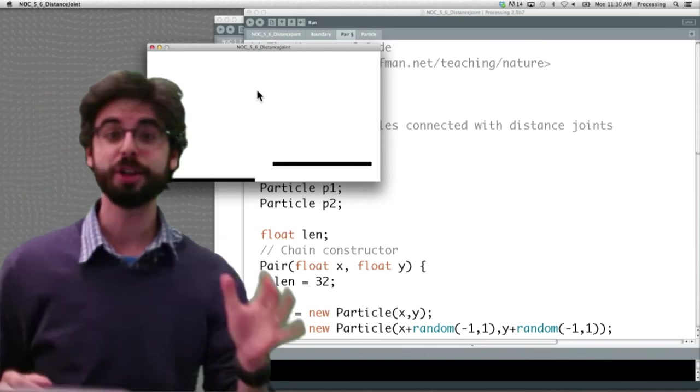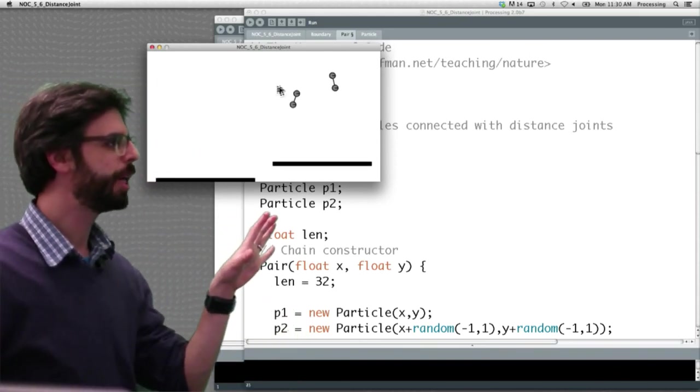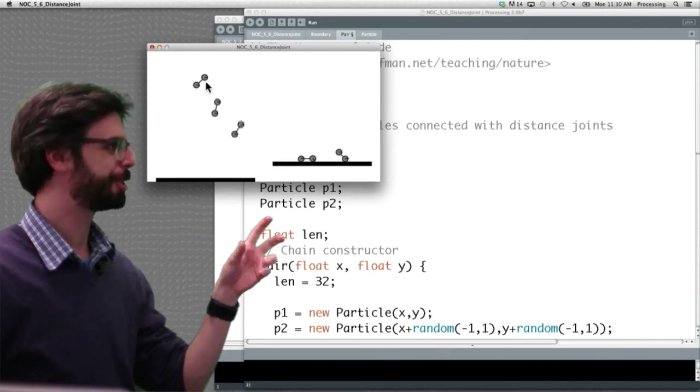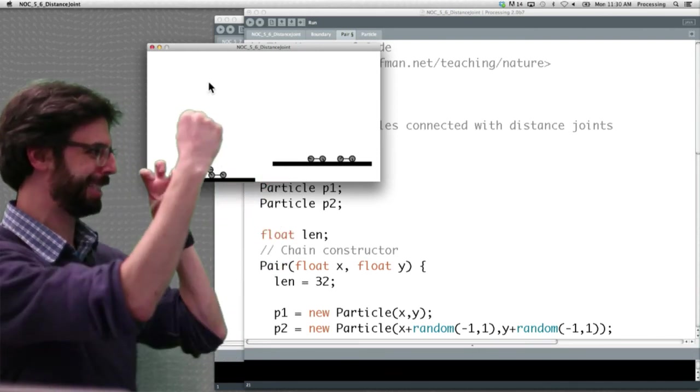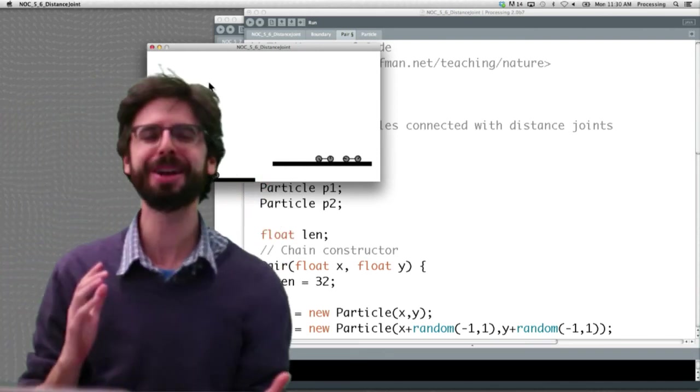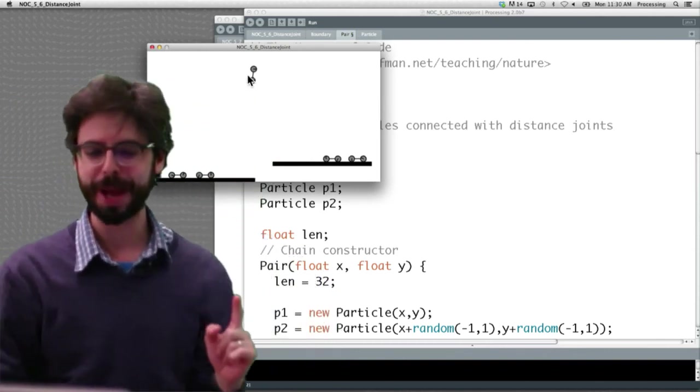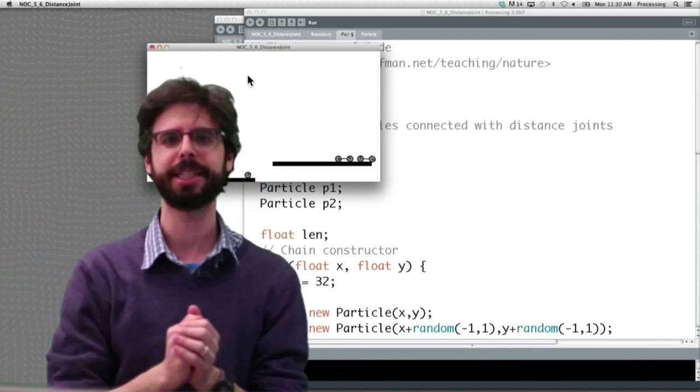Okay, let's take a look at this example. So as I click the mouse, we can see these little springy particle, line, circle things are connected. So what's going on here? Each time I click the mouse, we've made two Box2D bodies and one joint connecting them.